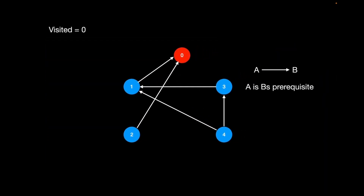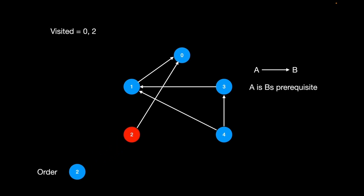Can we start with course 0? The answer is no — course 0 has prerequisites of 1 and 2. So we look in the adjacency list for its neighbors. Its neighbors are 2, and we find that we can actually start with 2 as the first course because 2 has no neighbors, meaning no prerequisites.